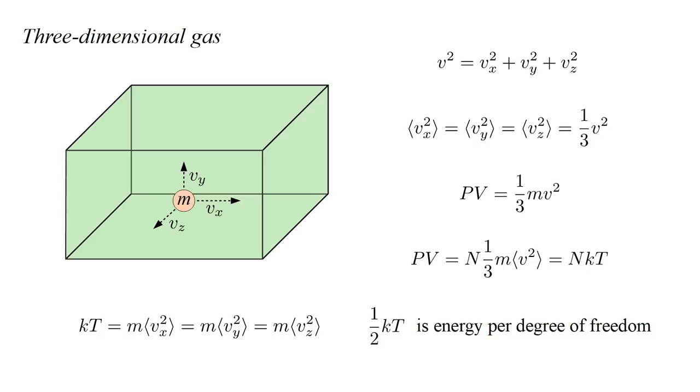We have established that in three dimensions, pressure P times volume V equals number of molecules N times one-third molecular mass M times mean square velocity. And this equals N times Boltzmann's constant K times temperature T.